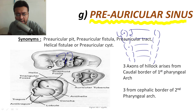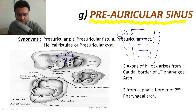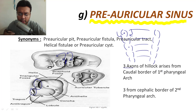From the first and second pharyngeal arches, six hillocks of His develop — three from the caudal border of the first pharyngeal arch and three from the cephalic border of the second pharyngeal arch. These hillocks of His fuse with each other to ultimately form the pinna. The tragus is formed by the first hillock, and the ascending crus of the helix is formed by the second and third hillocks. This forms the basis of formation of pre-auricular sinus.